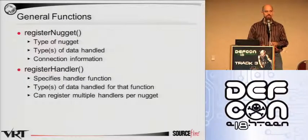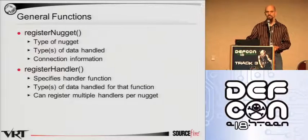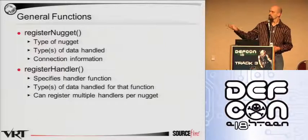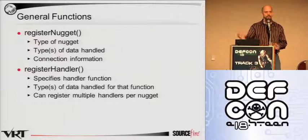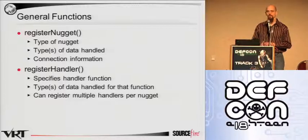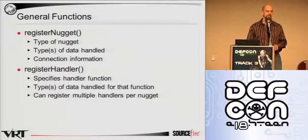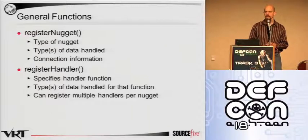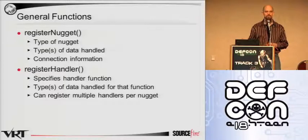Since nuggets are building blocks and the whole system is designed around the idea of specialized individual pieces working together as a whole, we have some general functions. Register nugget tells the dispatcher 'I'm here, this is my name, my UUID, and the kind of data that I'm either taking in or putting out.' Register handler is more of a detection nugget function — it tells the dispatcher what kind of data it handles, and it is possible to have a single detection nugget handle multiple types of data by calling register handler with different function pointers for each relevant data type.